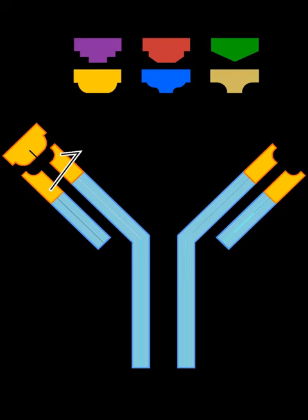Vaccines are examples of antigens in an immunogenic form, which are intentionally administered to a recipient to induce the memory function of adaptive immune system toward the antigens of the pathogen invading that recipient.